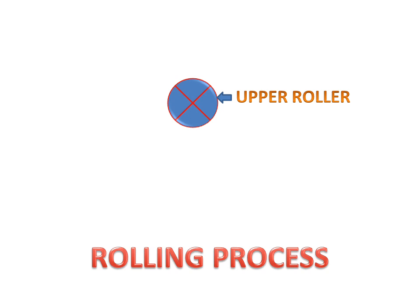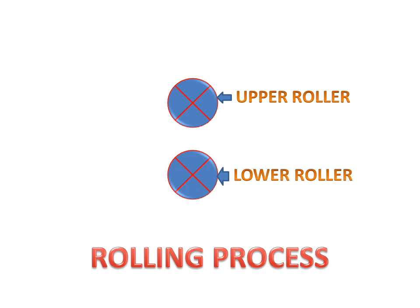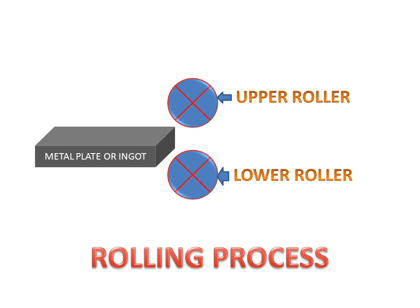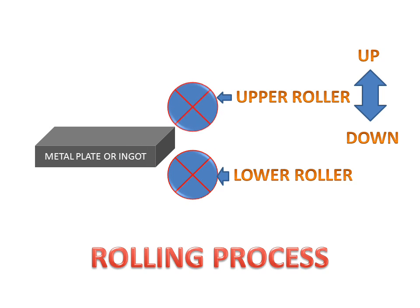Firstly we will discuss the rolling process setup. We have an upper roller and a lower roller. A metal plate or ingot passes between these two rollers. The upper roller can move up and down, and we can adjust it according to the size of the metal plate. This roller can go down and this one can go up.